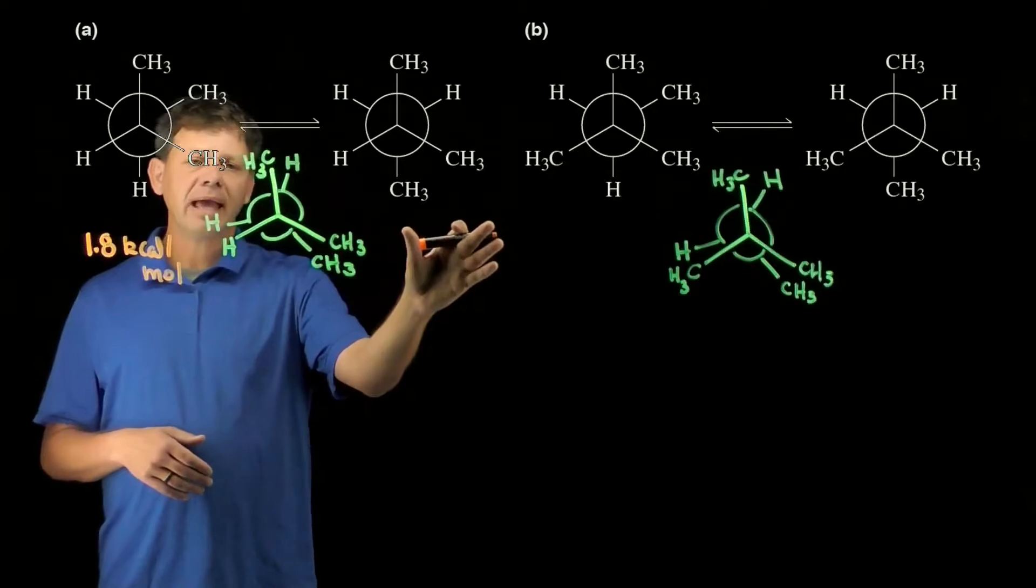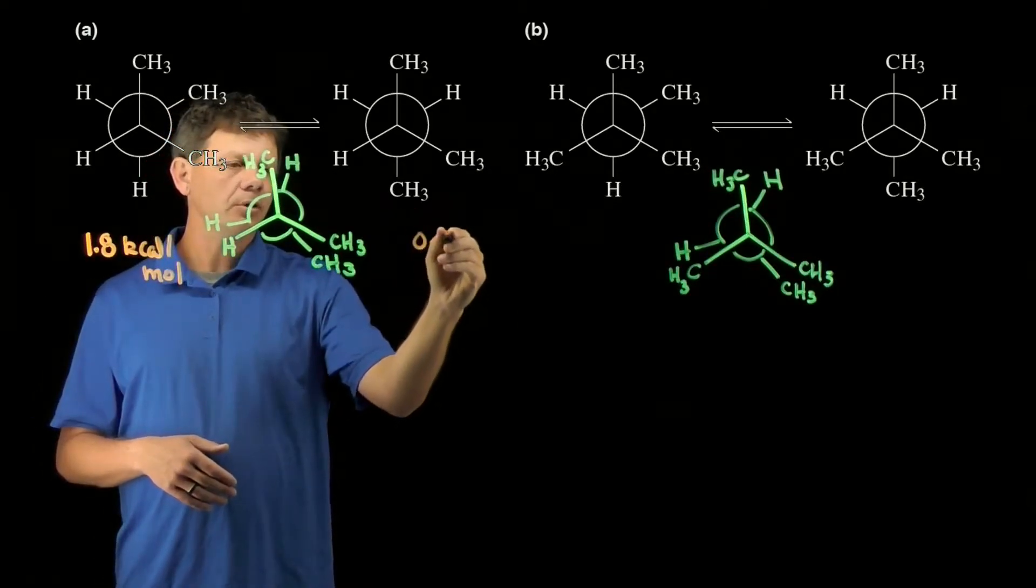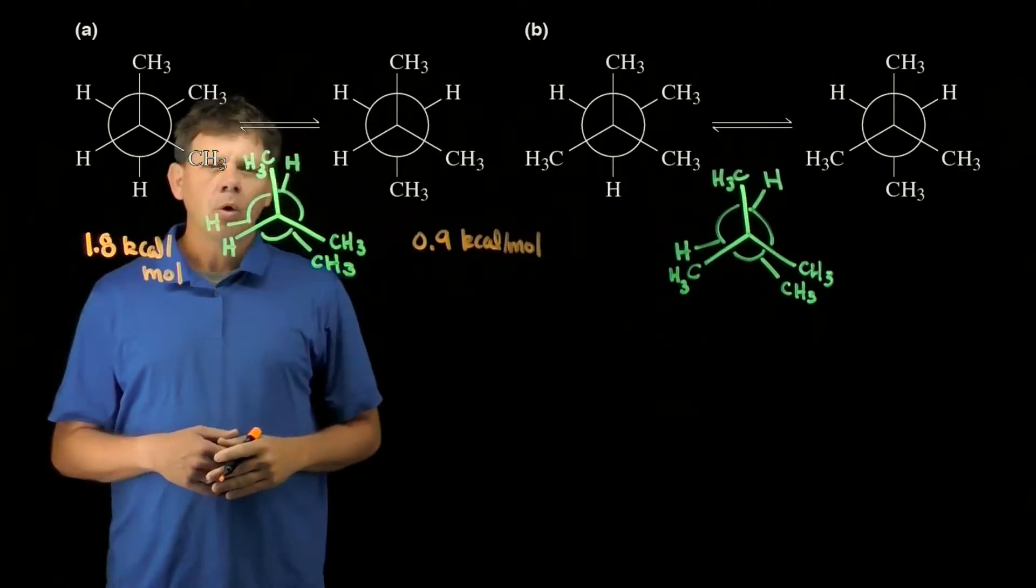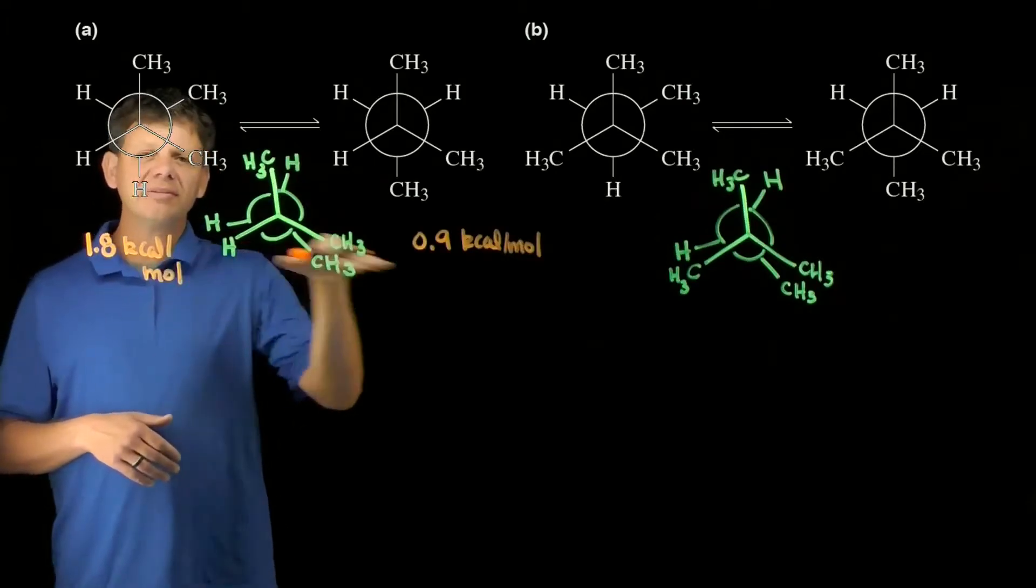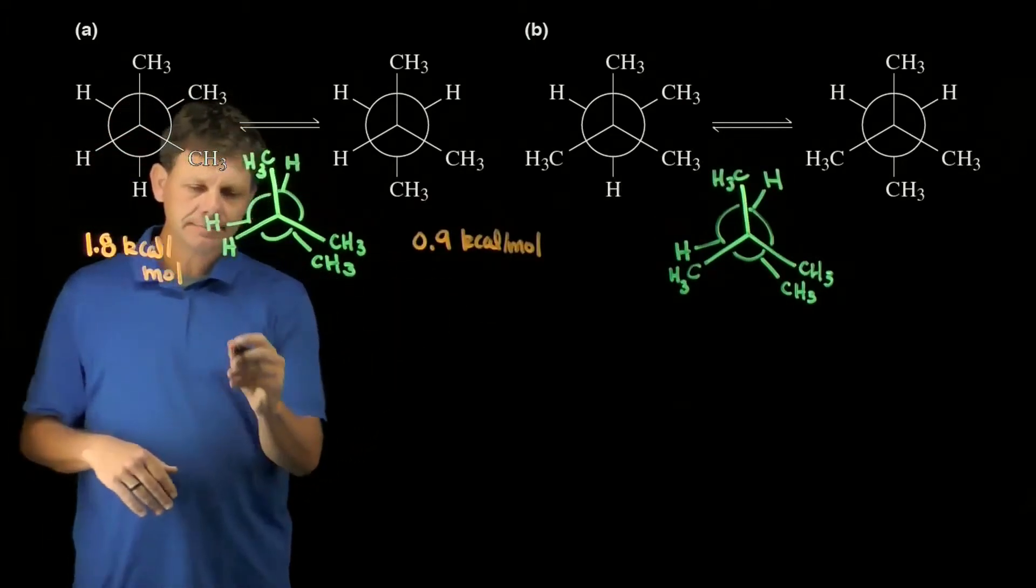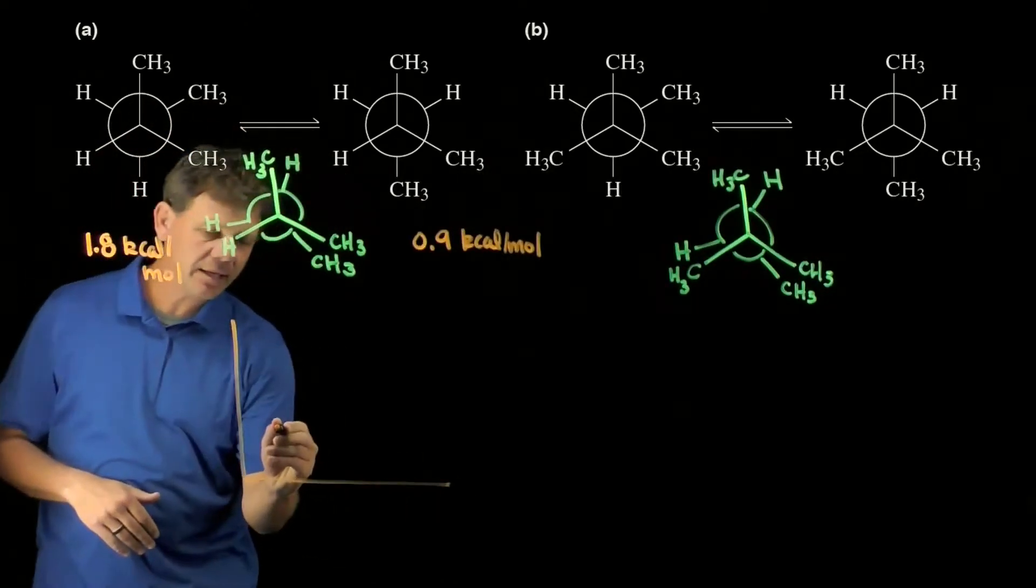The product of A has just one gauche interaction, so net that's going to be 0.9 kilocalories per mole. What this tells us from the beginning is this is going to be a downhill reaction—we're going to go from 1.8 to 0.9.